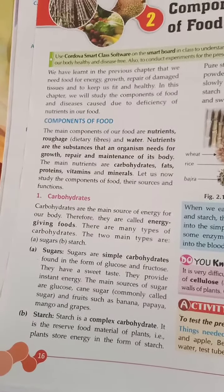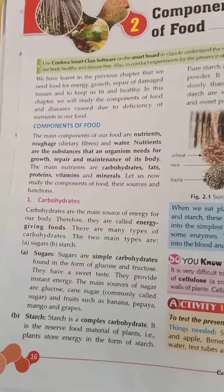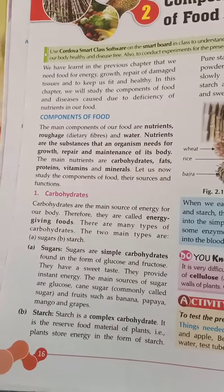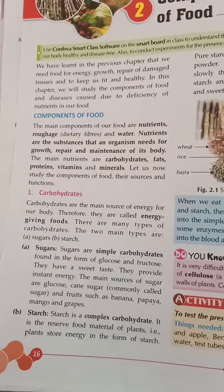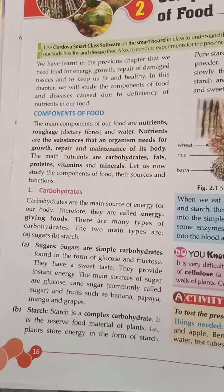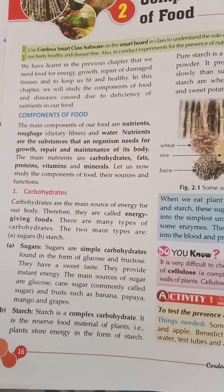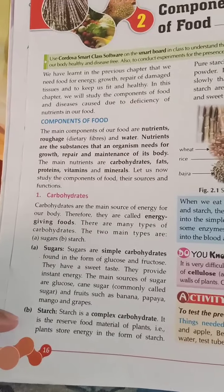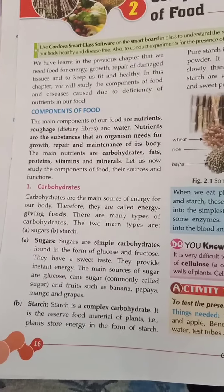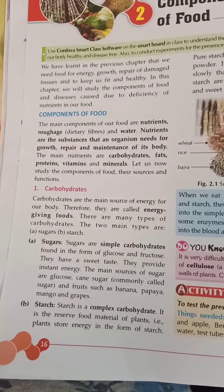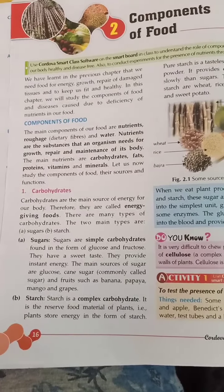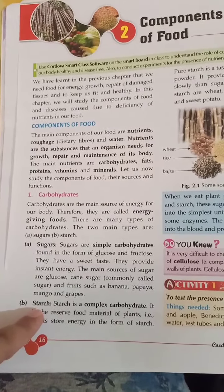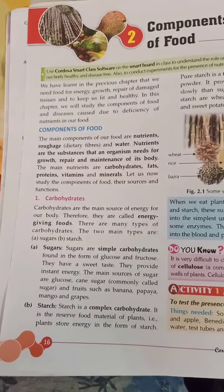Carbohydrates are the main source of energy in our body, and therefore they are called energy-giving food. Carbohydrates are divided into two types: sugars and starch. Simple carbohydrates are known as sugars, while complex carbohydrates that are not easily broken down are called starch.